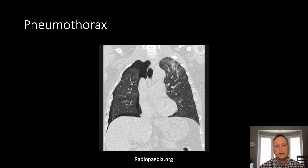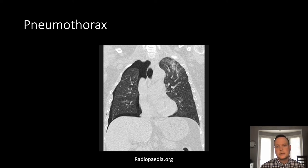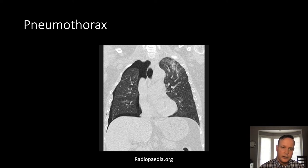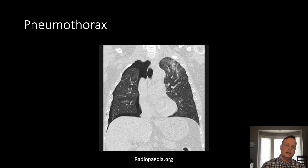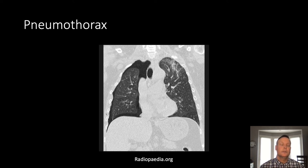Pneumothorax is a common finding in the setting of trauma, and it will commonly be associated with either a chest wall defect such as rib fractures, or an injury to the lung or airway. Both of those are commonly associated with air getting to other spaces in the chest, whether it's pneumomediastinum or chest wall emphysema. Here we've got primarily pneumothorax — it's probably about moderate in size, and the pneumothorax is preferentially going to be anteriorly distributed in a patient who's supine.